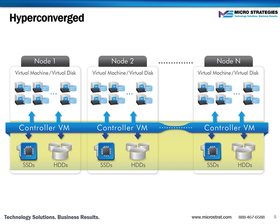The pros to a hyperconverged environment are that it's centrally managed, it's highly scalable, it's high-performing within its caching envelope, and that it can, in certain circumstances, save on overall cost of ownership. The downsides are that you can only run the software the vendors have certified, and some solutions require you to expand your storage footprint even if you just need more servers, or vice versa. If you overrun the disk caching mechanism, your performance will be unacceptable, and there's a cost and overhead associated with hyperconverged software itself.